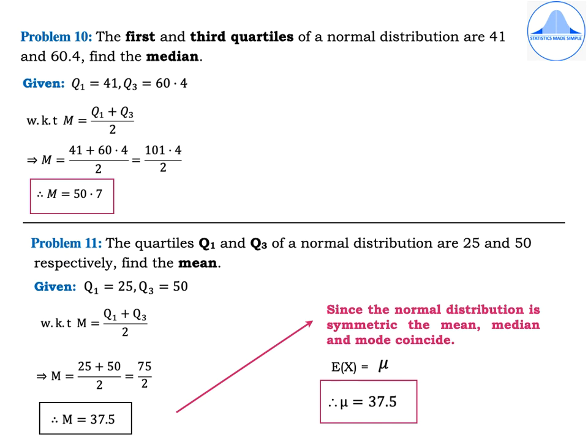Problem 10: The first and third quartiles of a normal distribution are 41 and 60.4 — find the median. Given Q1 = 41 and Q3 = 60.4. Using the formula M = (Q1 + Q3) / 2 = (41 + 60.4) / 2 = 101.4 / 2, the median M = 50.7.